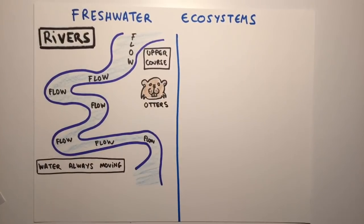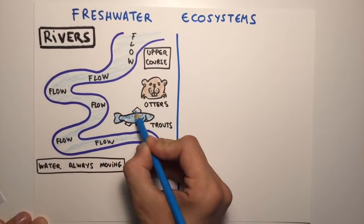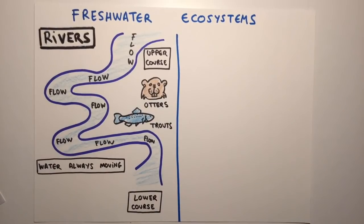In rivers, the water is always moving, so living things need to adapt to the flow. Rivers are home to otters and trout, which live in the upper courses of rivers, where the water is cold and flows very fast.